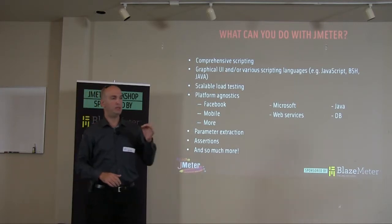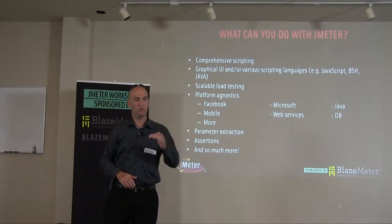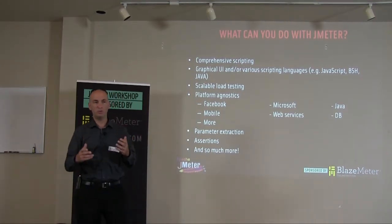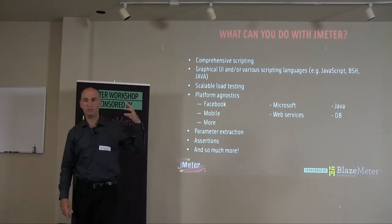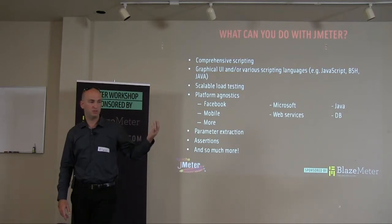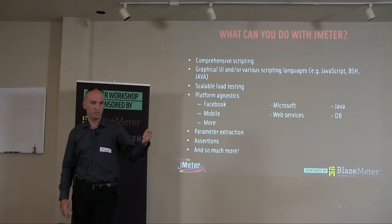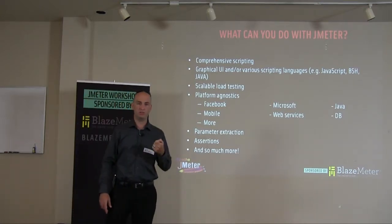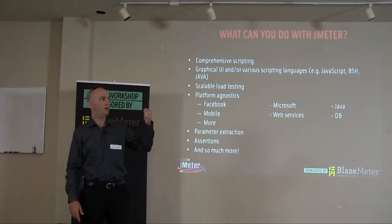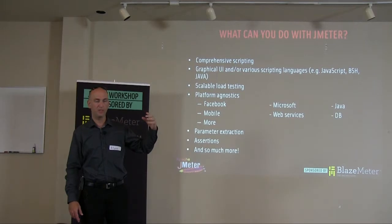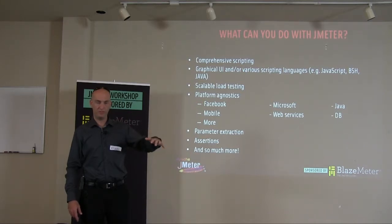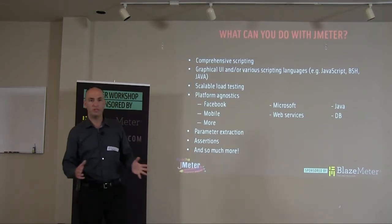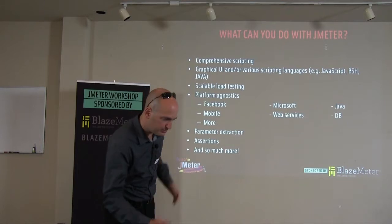Assertions — the ability to say if a request succeeded or failed. Obviously there's 404 not found or connection timeout as objective failure criteria. But say I did the login and the login wasn't successful — the HTTP code coming back is 200, but I need an assertion to catch words like 'your password is not good' or 'username is not good' to say this transaction failed. JMeter provides this, and so much more.